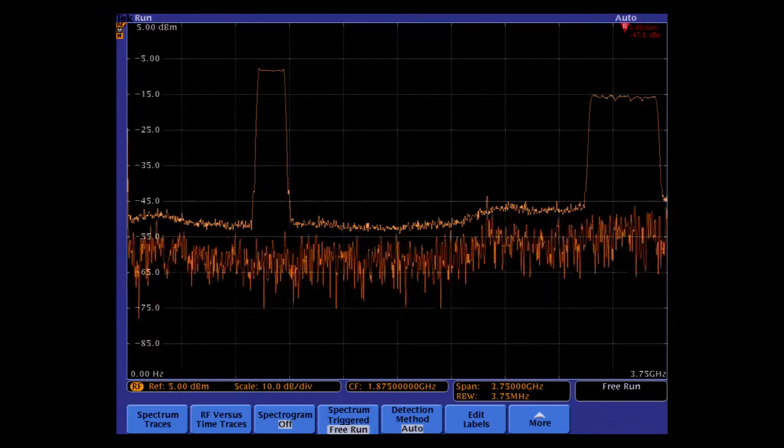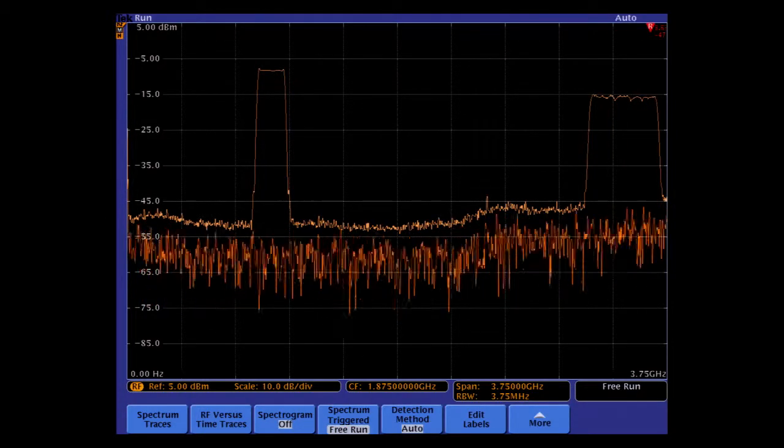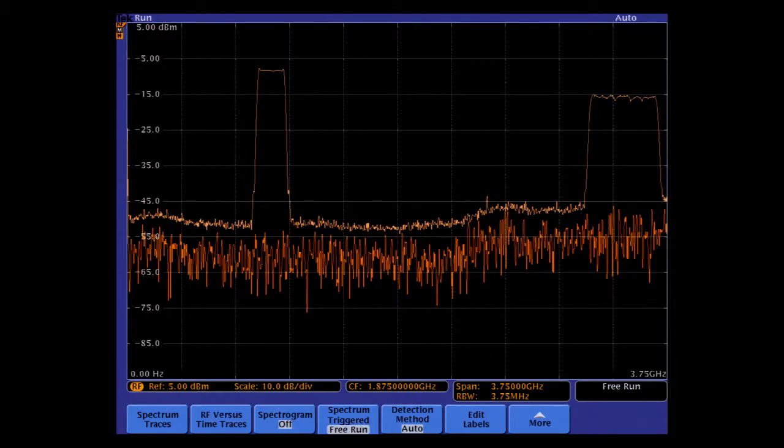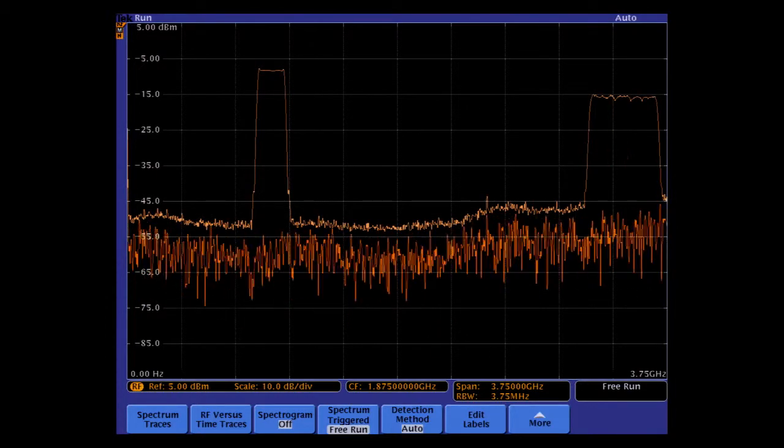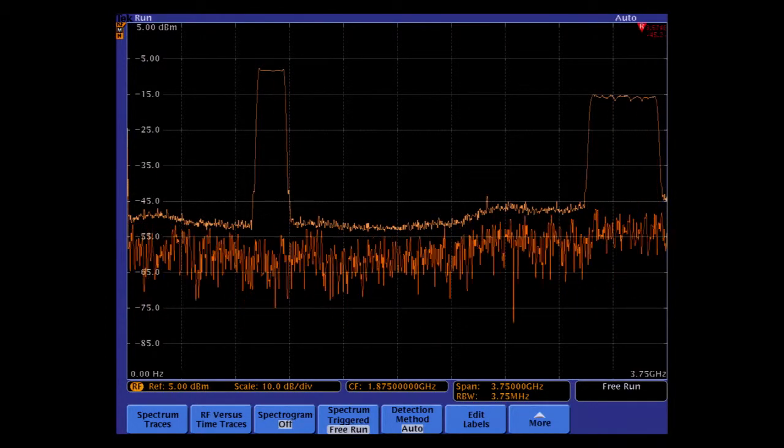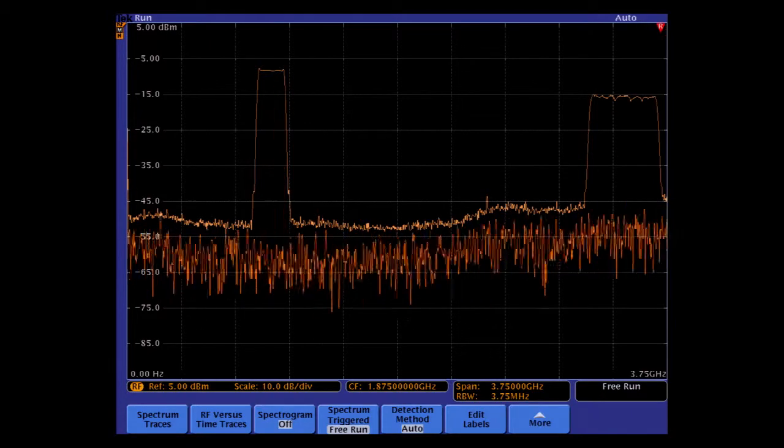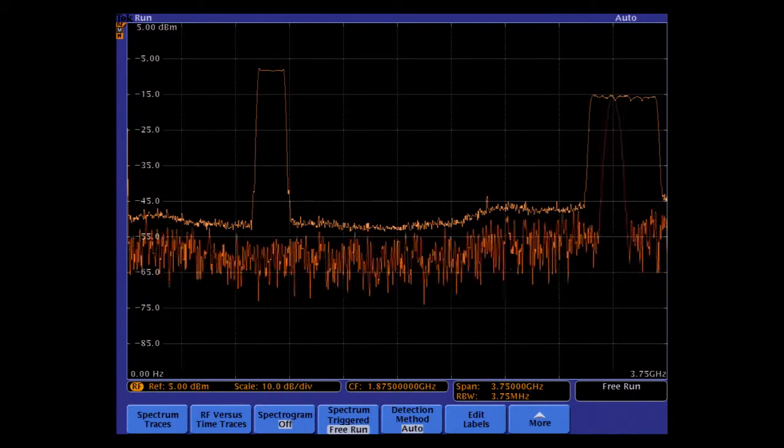In simple terms, this shows how the MDO's wide instantaneous capture bandwidth can be used to achieve a fast scan of a wide frequency range of interest, in this case from 50 kHz to 3.75 GHz.